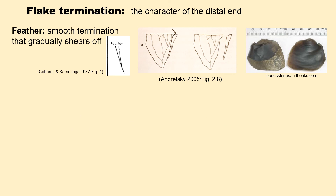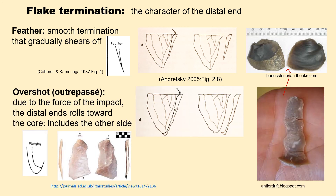I'll begin talking about flake attributes by talking about flake termination — that is, how the distal end looks. Flintknappers are aiming, in general, to create a flake that ends with a feather termination: a smooth termination that gradually sheers off. I like this photograph because the feather termination is so thin it's translucent. Whereas overshot flakes — outre passé, also called plunging flakes — are hit so hard that the bottom of the flake curls around to the other side of the rock from which the flake was knocked.